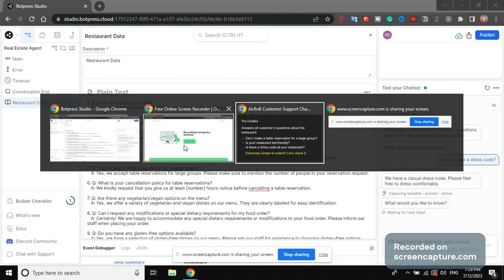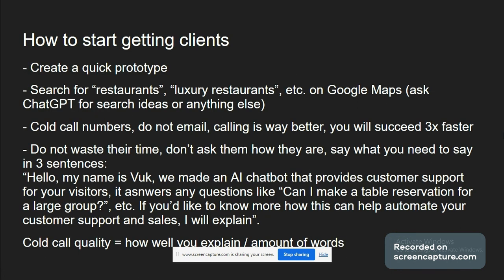Now, how to start getting clients. You must always create a quick, easy, and fast prototype — 20 minutes to one hour. Then search for restaurants, luxury restaurants, or restaurants in your city on Google Maps, take their numbers and emails, and contact them. You can always ask ChatGPT for search ideas, keywords, or help with anything in this whole process.